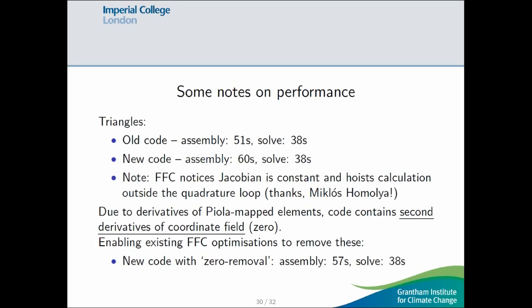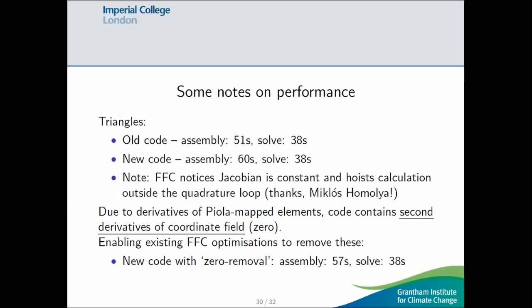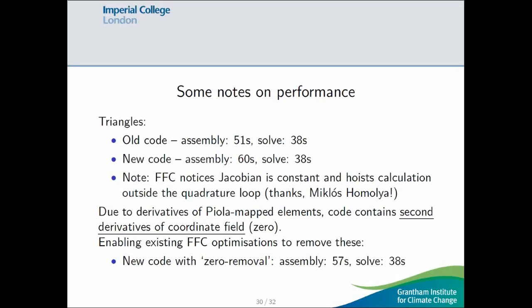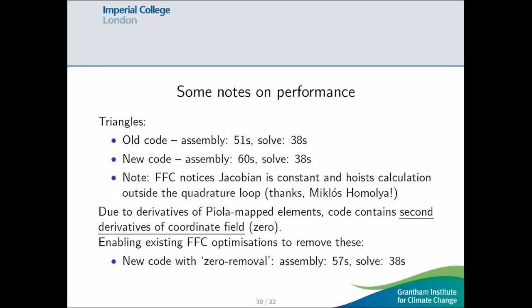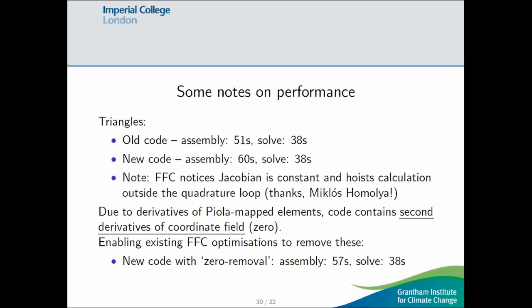So, Miklos made some changes so that FFC notices the Jacobian is constant and then hoists this calculation out of the loop. Also, because we had this problem of derivatives of Piola mapped elements, the code contains second derivatives of the coordinate field. But, we're on flat triangles, so the second derivatives are zero. And, we found some existing FFC optimizations that got rid of these. And, afterwards, it went down from 60 seconds to 57 seconds. So, we're paying about, at least in this example, about a 10% penalty from 51 to 57.